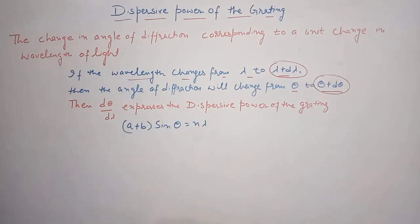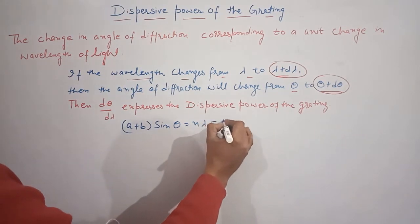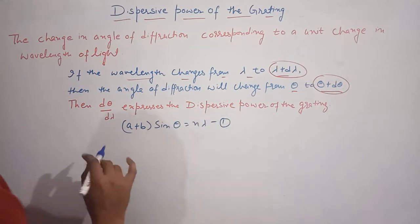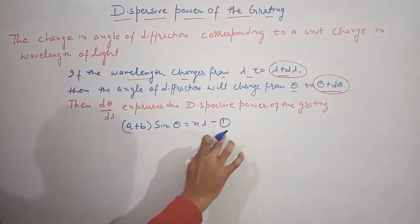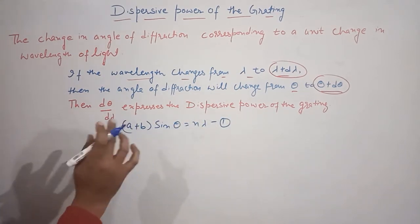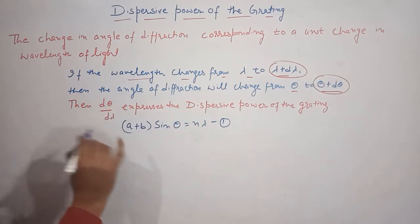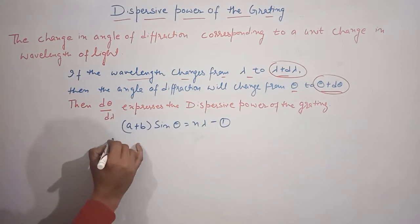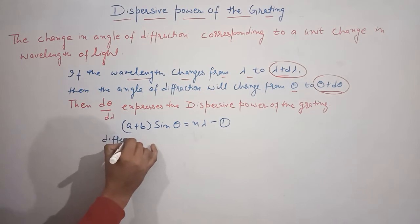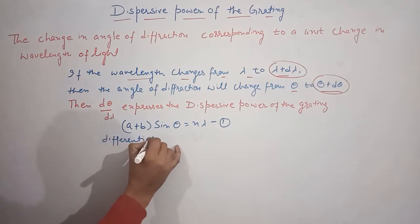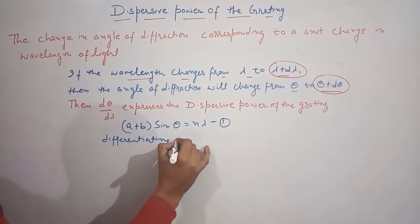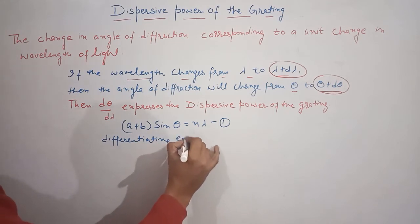This expression for n-th order principal maxima is equation number 1. Now let's differentiate this equation.